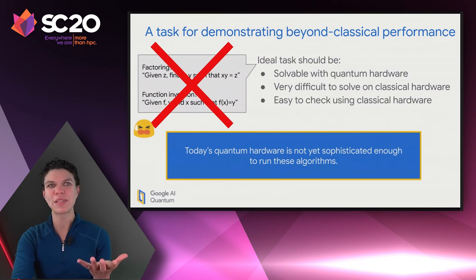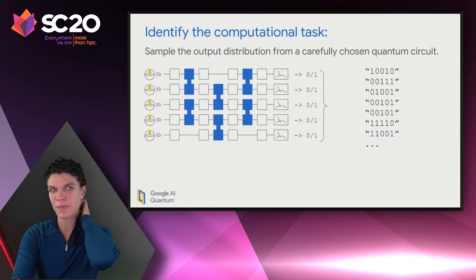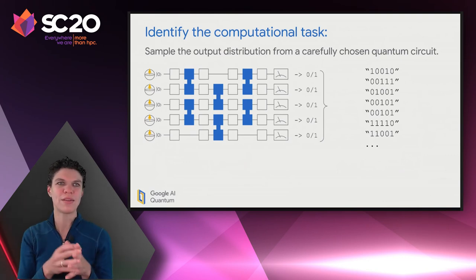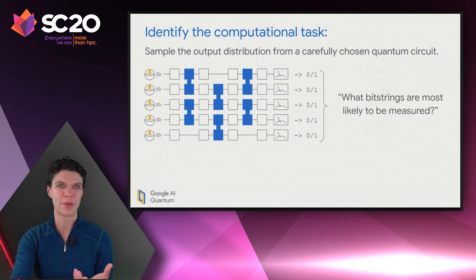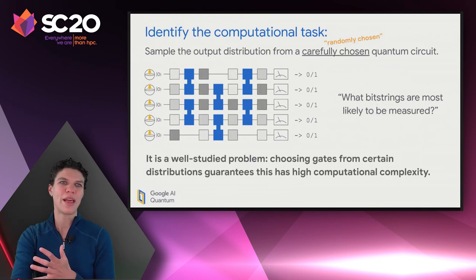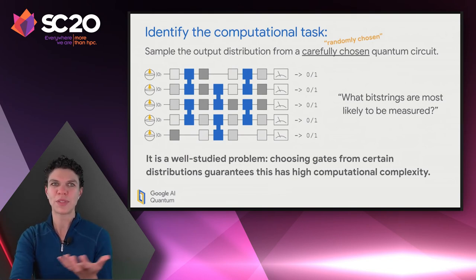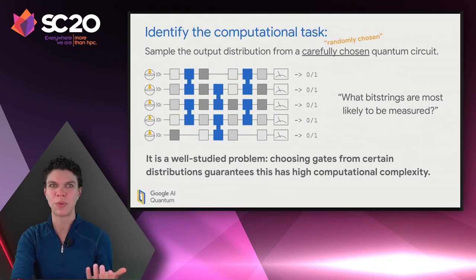The computational task we've identified is the following: we pick a quantum circuit — some set of gates in some pattern — and ask what is the output distribution from that circuit? The output distribution is how often we should see which bit strings of 0s and 1s as our measurements; which bit strings are most likely to be measured. It turns out this is a well-studied problem. For certain choices of gates chosen from a randomly chosen distribution, that guarantees this problem has high computational complexity — it will be very difficult for a classical computer to sample that output distribution. And it is a good fit for a quantum computer because this is what a quantum computer naturally runs.